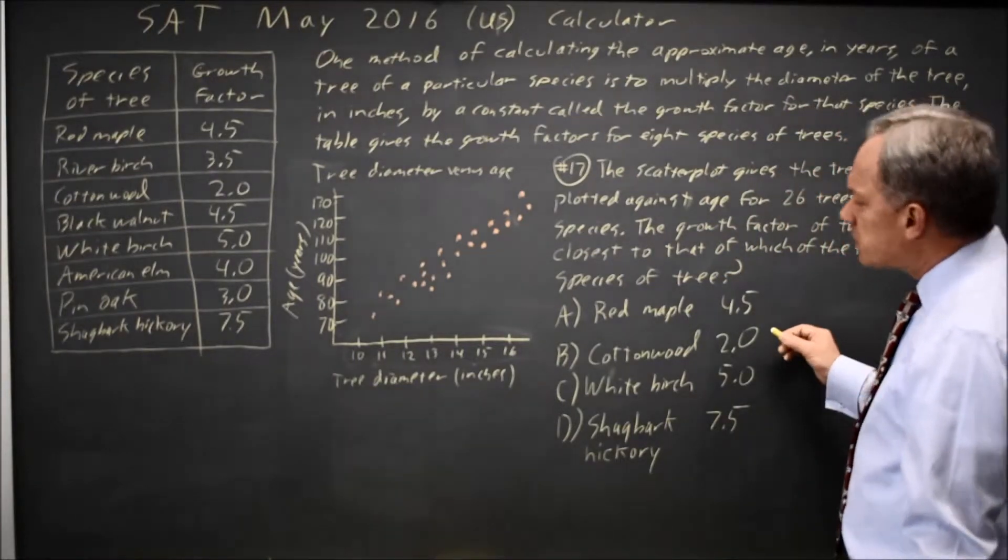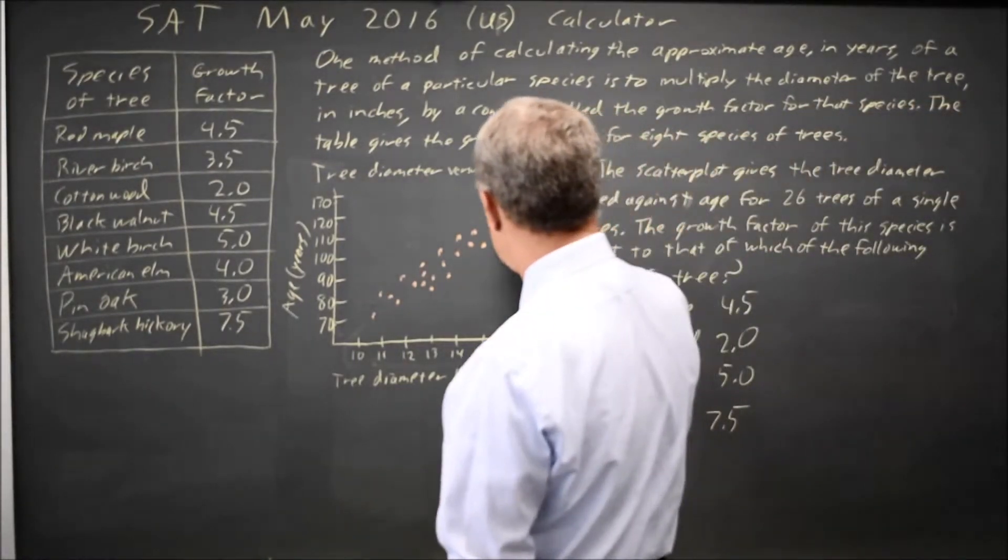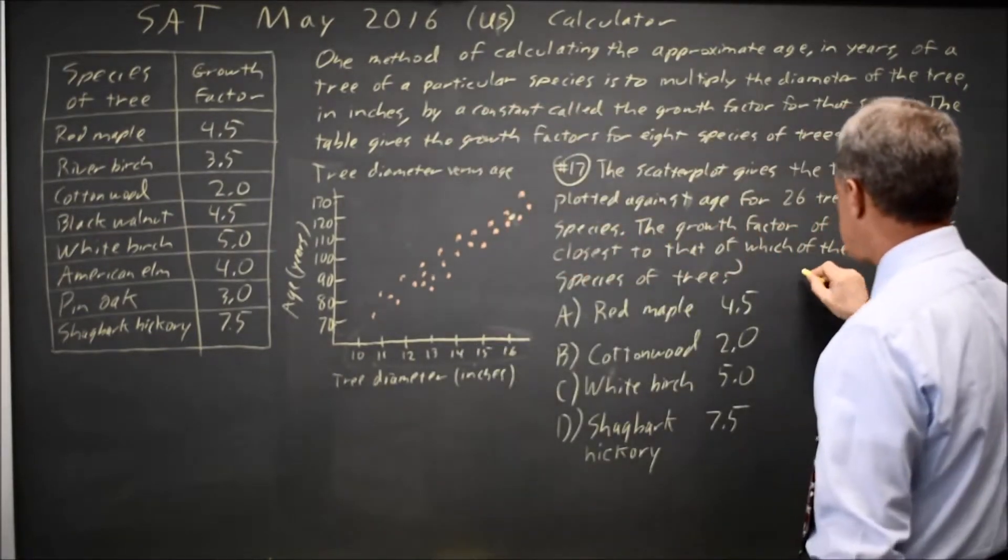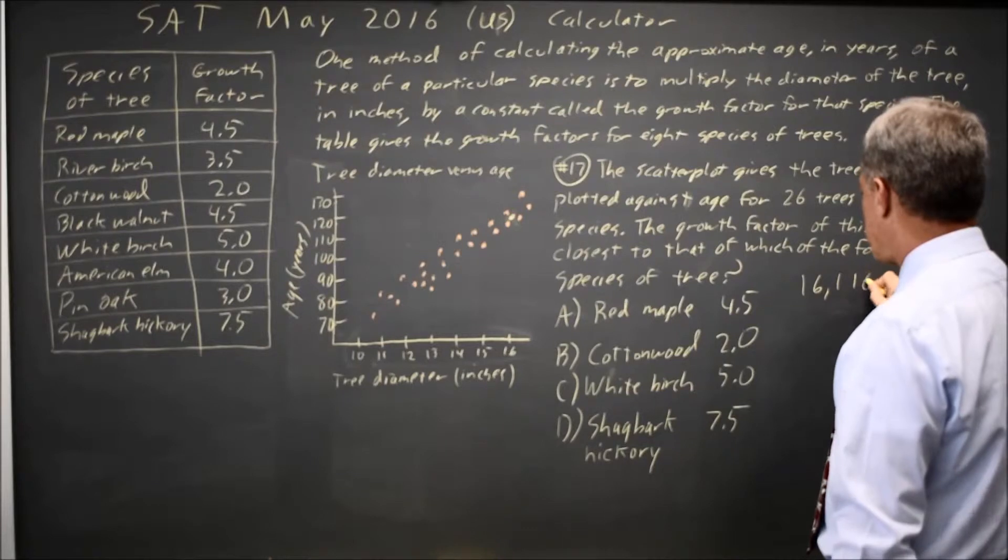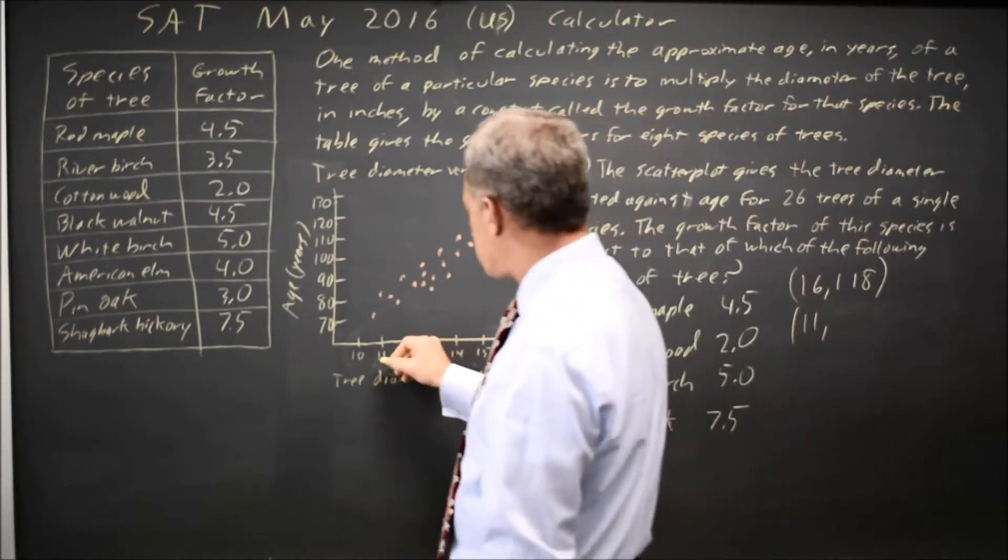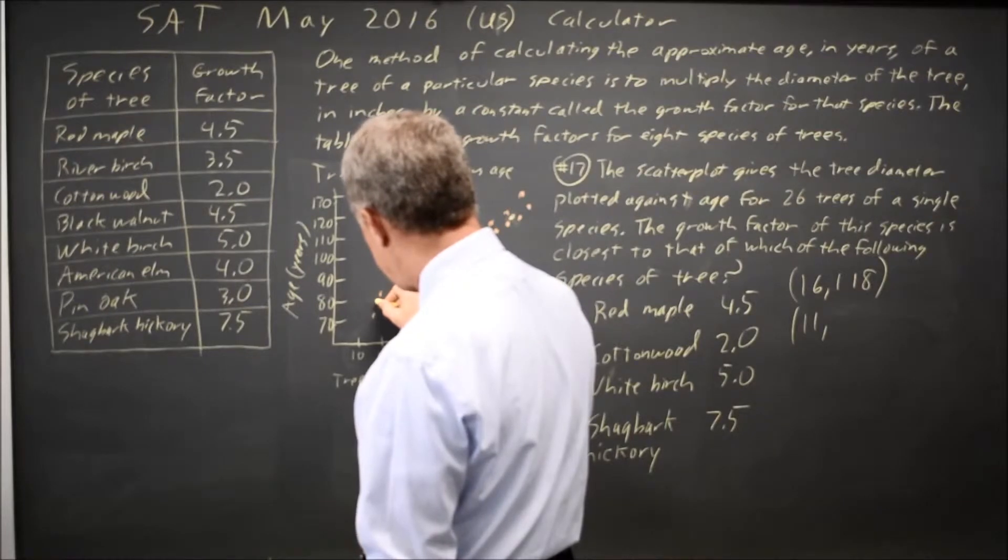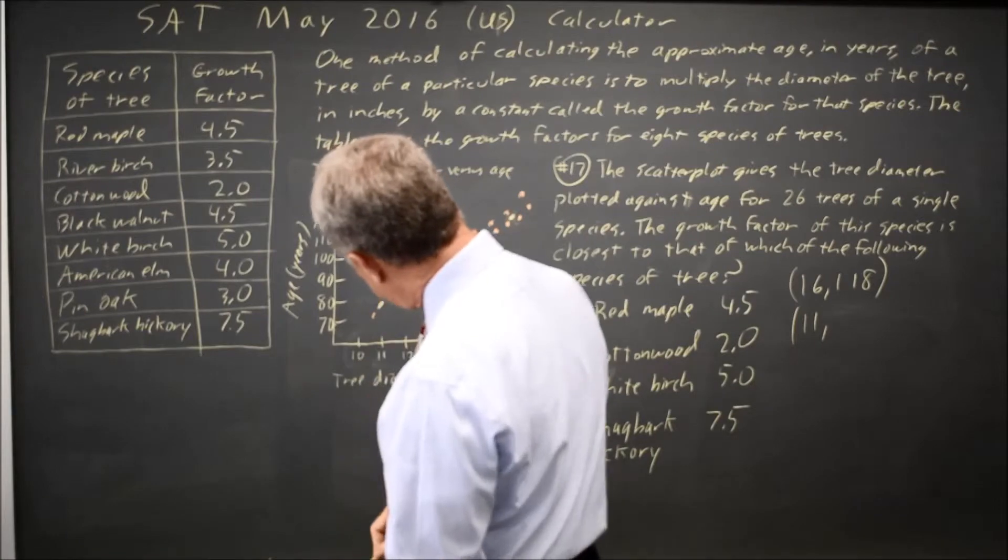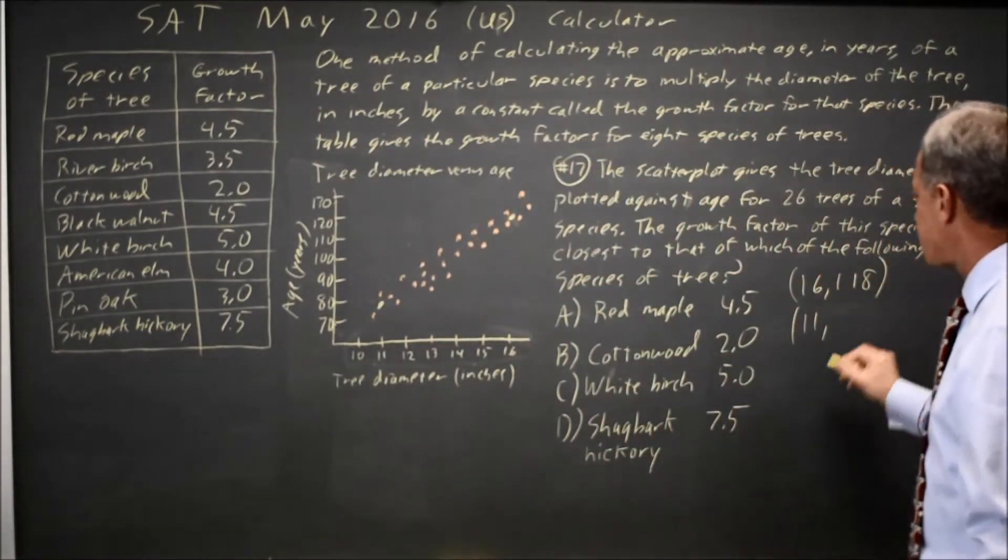I'm going to find the slope by choosing a point on here, maybe 16, 118, and 11. I like points that are far apart that we have a minor error in reading it, it doesn't throw me off. 11 is about 77 for a line of best fit.